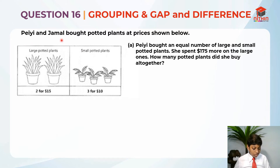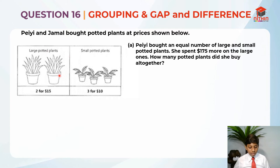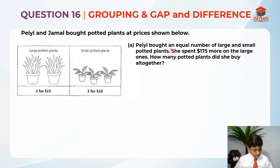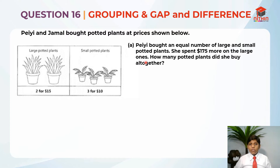Payee and Jammer bought potted plants at prices shown below. Large potted plants are $2 for $15, and small potted plants are $3 for $10. For part A: Payee bought an equal number of large and small potted plants, and she spent $175 more on the large ones. How many potted plants did she buy altogether?